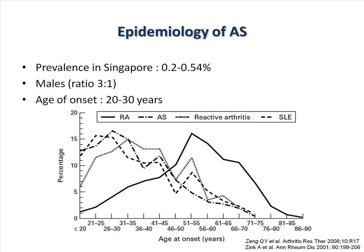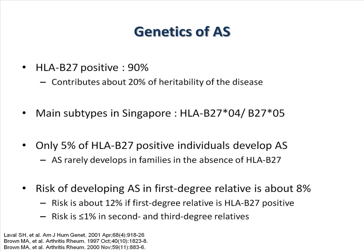The prevalence of ankylosing spondylitis in Singapore is estimated to be about 0.5%, and it is three times more common in males. Age of onset is seldom beyond 45 years. 90% of individuals with ankylosing spondylitis will be HLA-B27 positive. However, this gene only contributes 20% of the heritability of the disease. Only 5% of individuals with HLA-B27 positivity will go on to develop ankylosing spondylitis, and it rarely develops in families in the absence of HLA-B27. The risk of developing ankylosing spondylitis in a first-degree relative is about 8%.